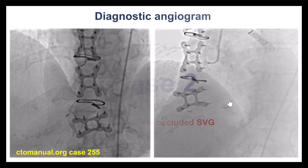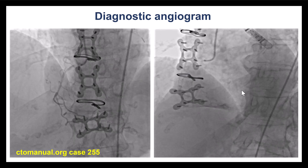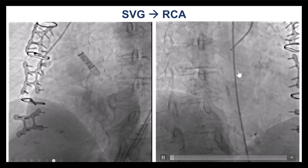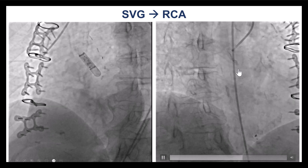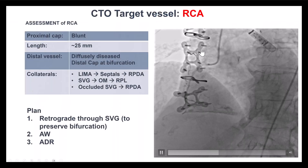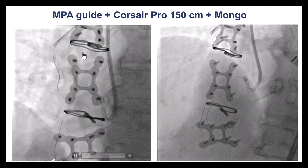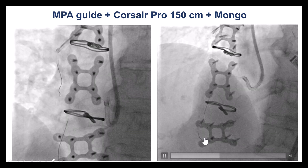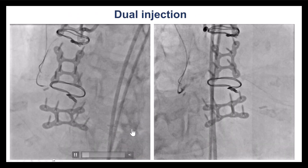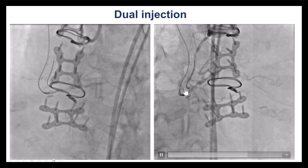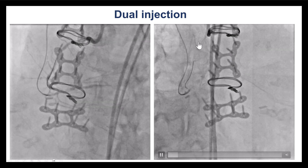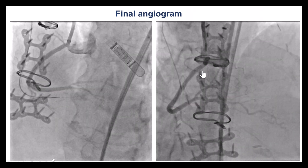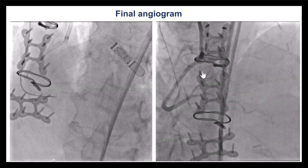This is another case showing retrograde through an occluded vein graft — an example of a right coronary artery CTO. The saphenous vein graft is occluded but has a nice entry to it, so presumably this is a relatively fresh occlusion. We tried to go retrograde through the saphenous vein graft, using a Corsair along with a Mongo polymer-jacketed wire that advanced nicely all the way down to the distal anastomosis. Once we delivered the wire and microcatheter, we did a dual injection through the microcatheter and through the occluded RCA guide, and were able to advance the microcatheter and wire retrograde. The final angiogram shows successful recanalization of the native right coronary artery.